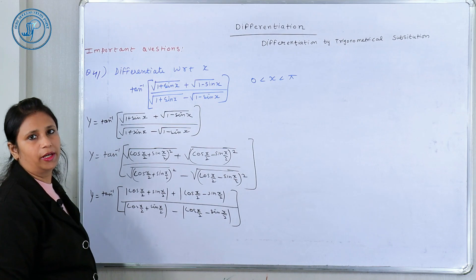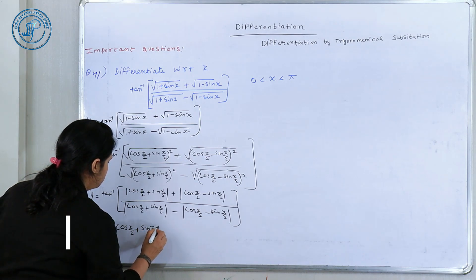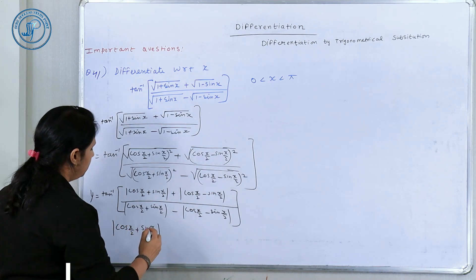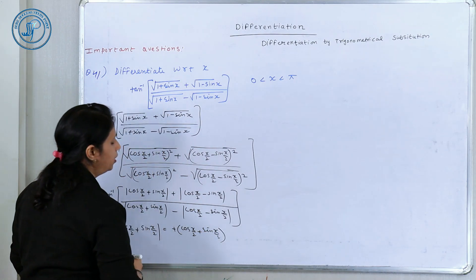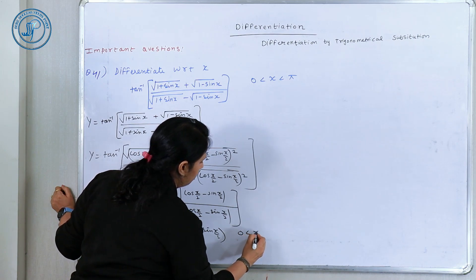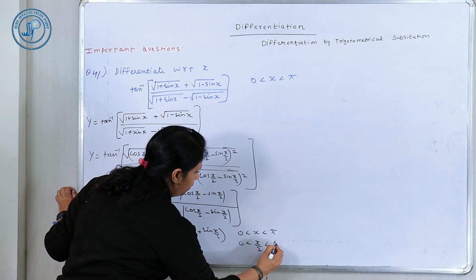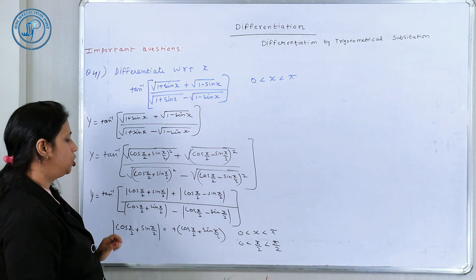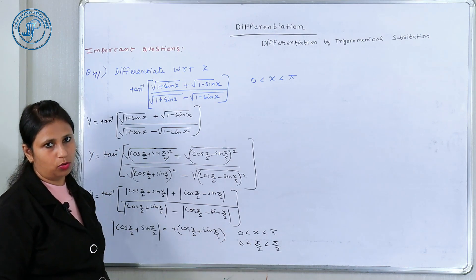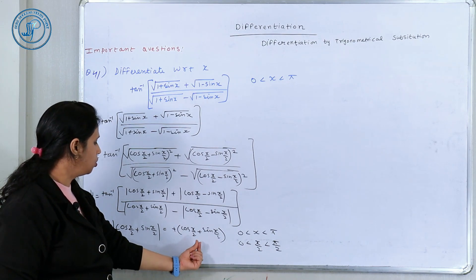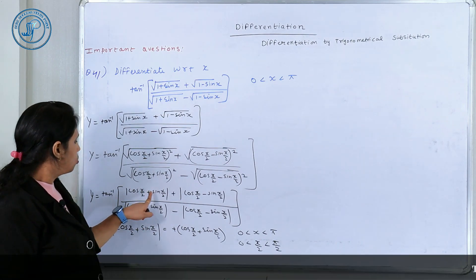Let's check the sign of cos(x/2) + sin(x/2). Since x lies in (0, π), x/2 lies in (0, π/2). In this interval both cos and sin are positive, so their sum is always positive. So the modulus of cos(x/2) + sin(x/2) is simply cos(x/2) + sin(x/2) — positive throughout.